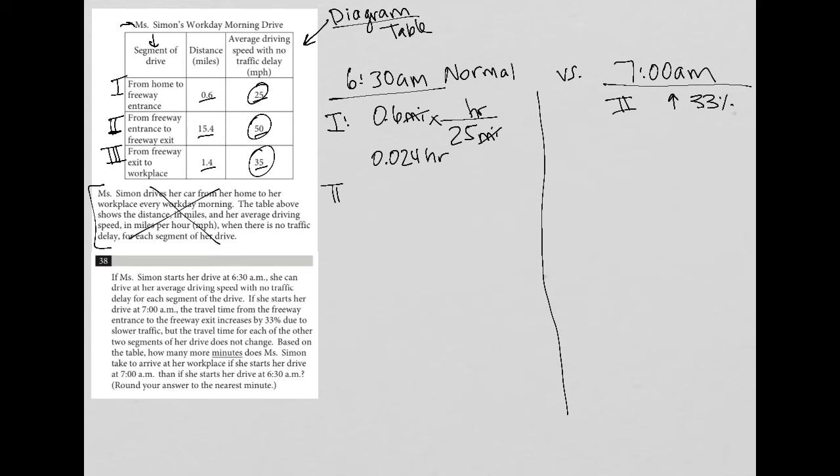For phase two at 6:30 AM, that's 15.4 miles at an average speed of 50 miles per hour. Same situation with the setup.